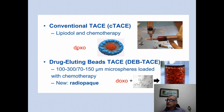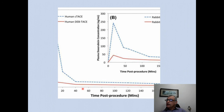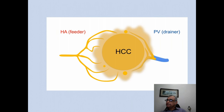In conventional TACE, doxorubicin is mixed with Lipiodol. Drug-eluting beads bind doxorubicin — some new particles are now radio-opaque. Looking at plasma doxorubicin concentration over time, conventional TACE with Lipiodol and doxorubicin or cisplatin produces a much higher plasma level compared to drug-eluting beads, because the binding of doxorubicin to particles in drug-eluting beads is much more efficient.